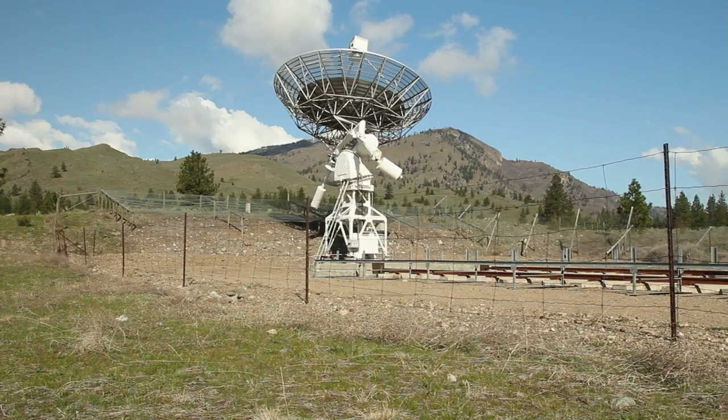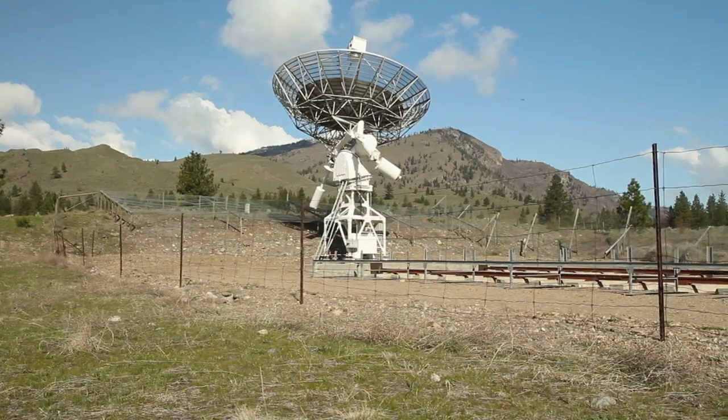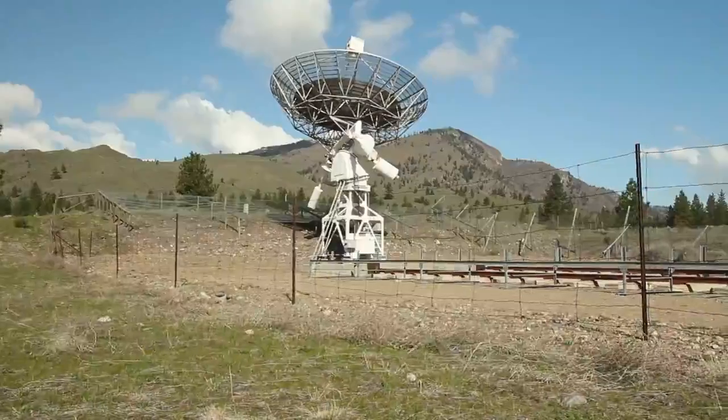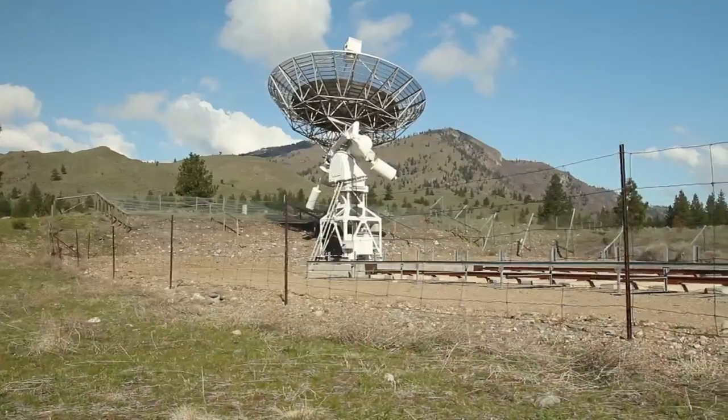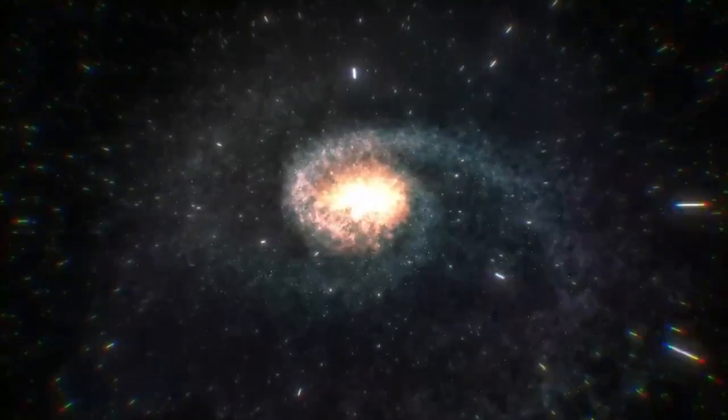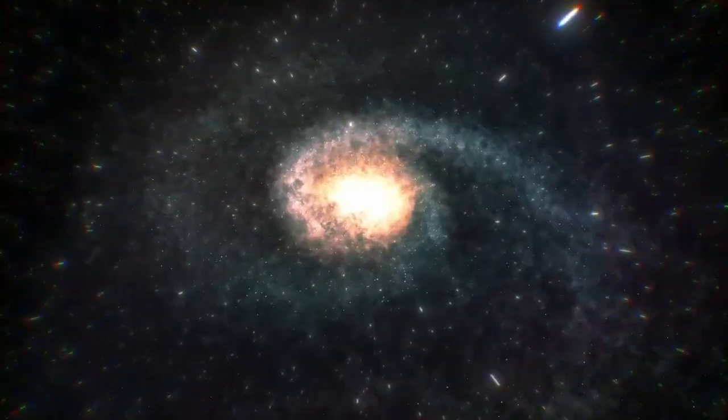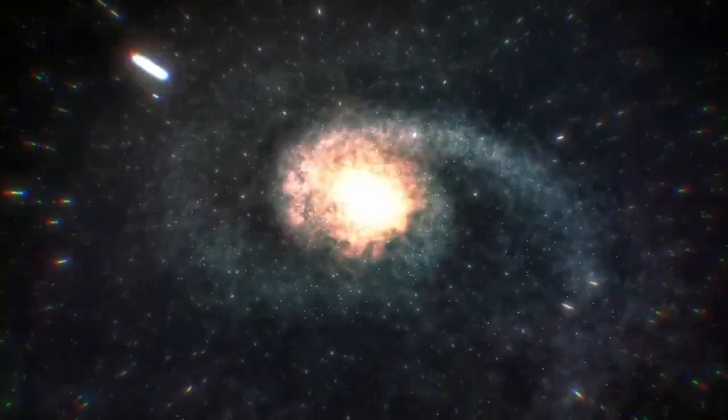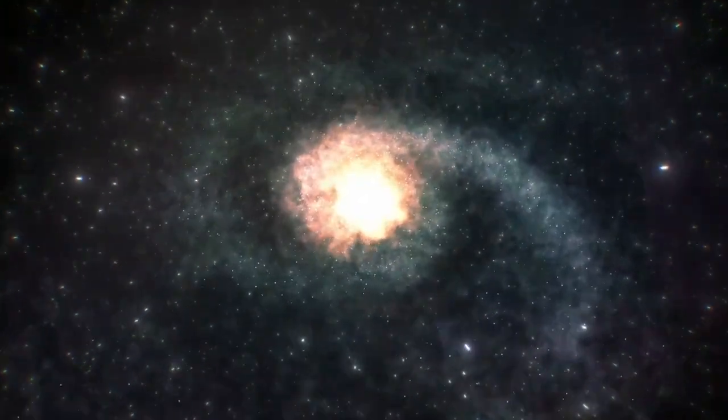3i Atlas is moving faster than anything humanity has ever tracked inbound from interstellar space, nearly 87 kilometers per second relative to the Sun as of this week. In practical terms, it's covering the distance between Earth and the Moon in less than 80 minutes. Every hour it travels, gravitational tugs from the Sun, Jupiter and Mars adjust its path by micrometers per second.